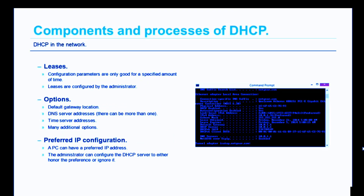Part of the DHCP process involves leases. The DHCP server hands out IP configuration information but sets a time limit for how long that configuration is valid — this is called the lease. The administrator can configure how long the leases are. There are also options the administrator can configure: the default gateway location, the DNS server address (more than one can be configured), and optionally a time server address for PC synchronization. Those are the big three options to remember.